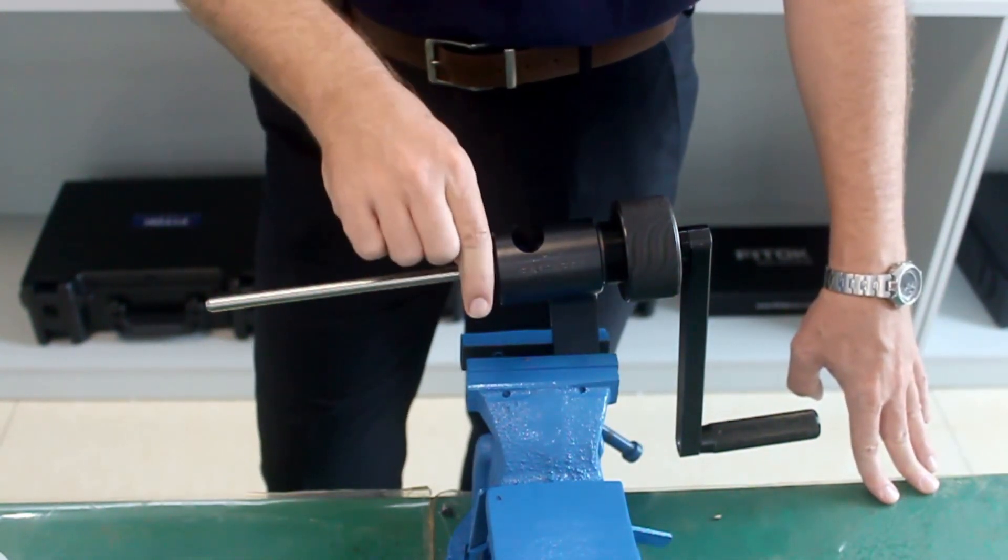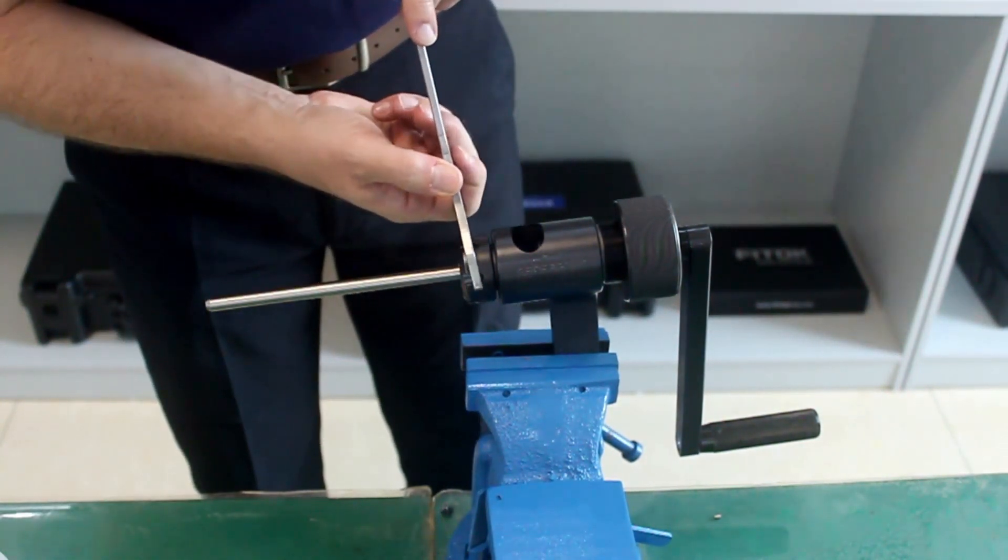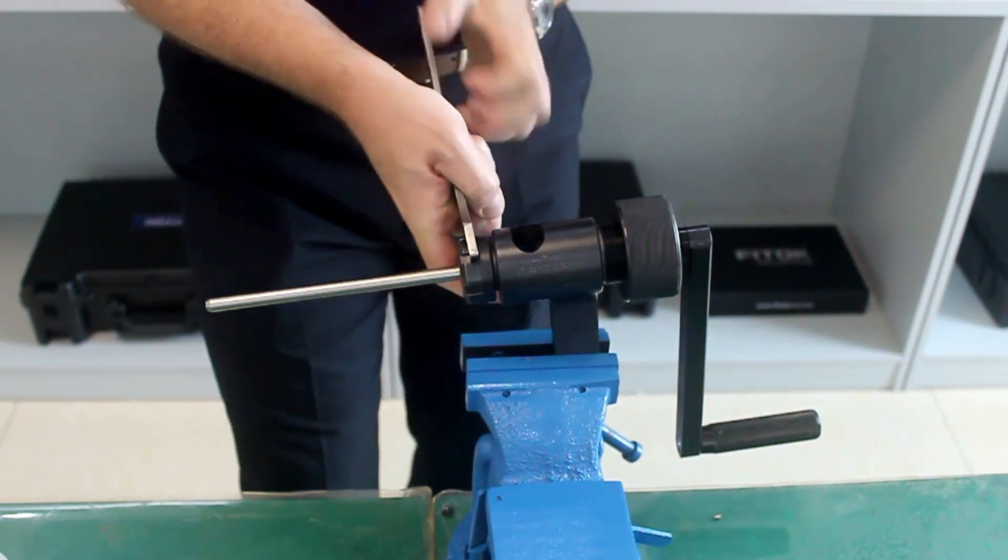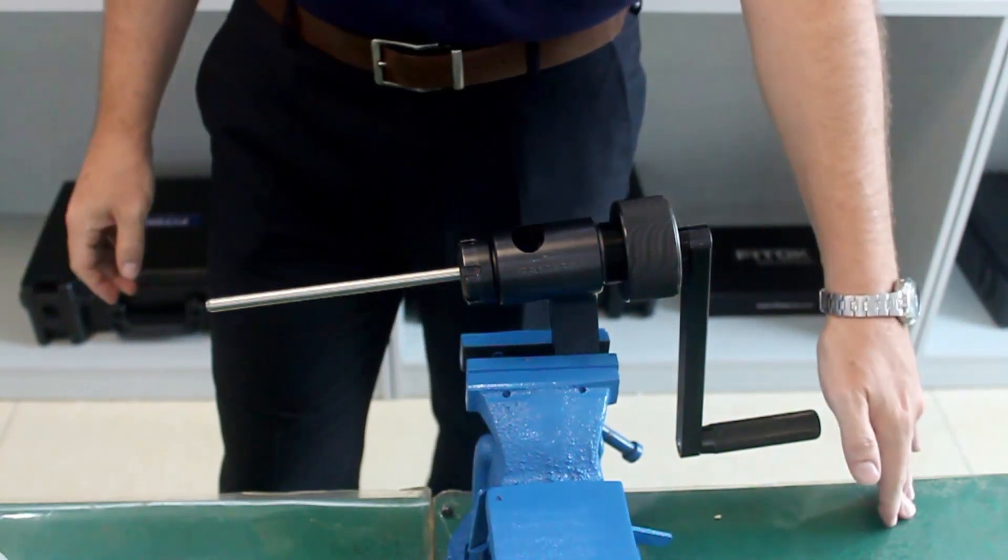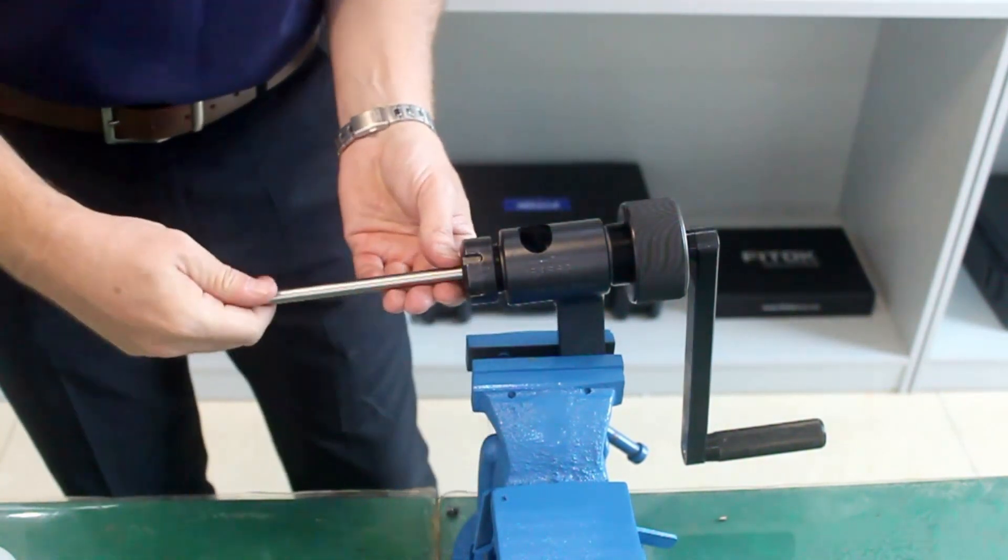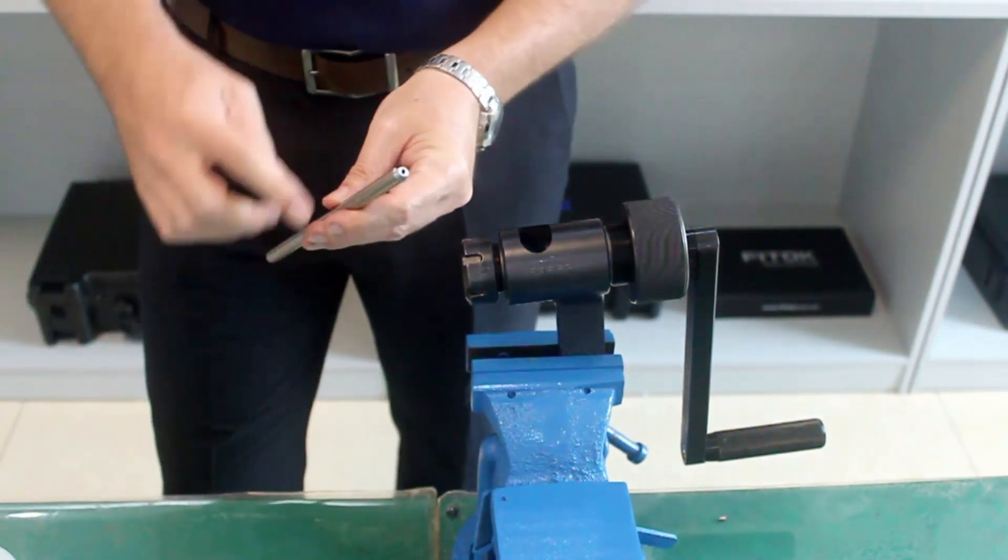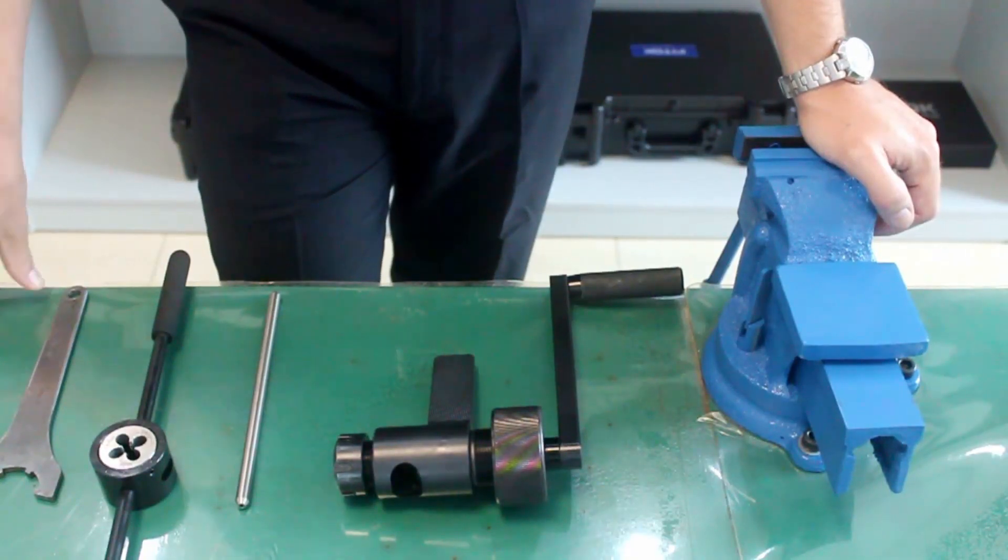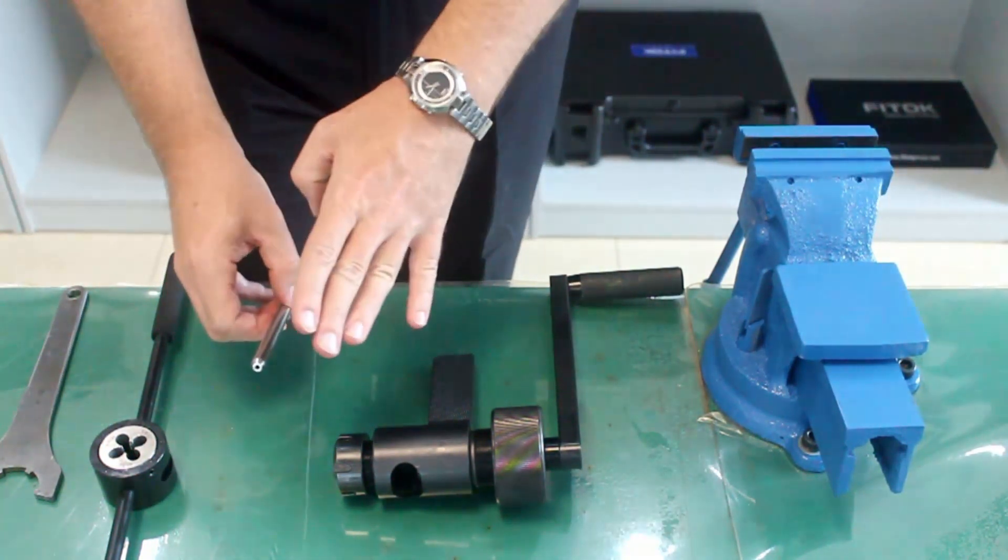Then we need to release the holding nuts using the tool. So the holding nut is already released, we can remove the tube and you see the coning is completed. So you can see that now we have the coning of the tube finished.